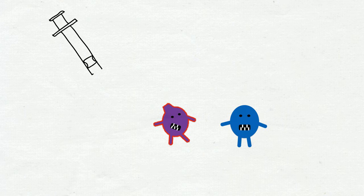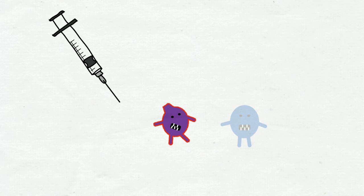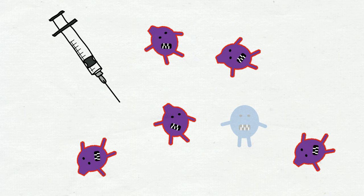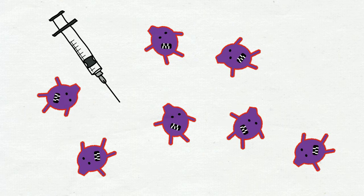Different bacteria are always in competition with each other. In the presence of an antibiotic, antibiotic resistant bacteria have the distinct advantage. They survive and thrive, whilst others wither and die. And that is what antibiotic resistance is.